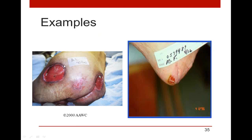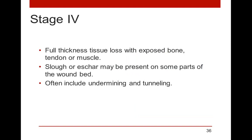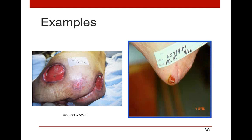Here are some pictures of stage threes. On the left, it's pretty obvious — a lot of depth, clearly into the subcutaneous layer with visible adipose tissue. However, the picture on the right is on a heel, where there's not much adipose tissue, so the wound looks fairly shallow. But that shallow wound is still a stage three because there wasn't much subcutaneous tissue there to begin with. Make sure you're looking at your tissue types, not just your measurements.